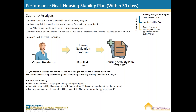Let's look at another scenario. Kami Henderson is presently enrolled in a crisis housing program. She's working full-time and is ready to start looking for a stable housing situation. In July 2017, she enrolled into a housing navigation program. She starts a housing stability plan with her caseworker, and they complete the plan on July 22, 2017. As you continue through this section, we will be looking to answer: did Kami achieve the performance goal of completing a housing stability plan within 30 days? Was Kami enrolled in the program during the reporting period? Was a housing stability plan completed with Kami within 30 days of her enrollment? Did the enrollment and the completed housing stability plan occur during the reporting period?